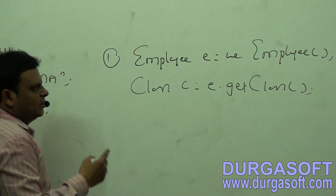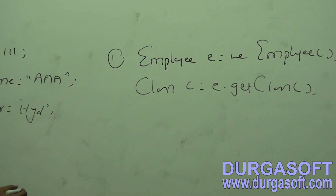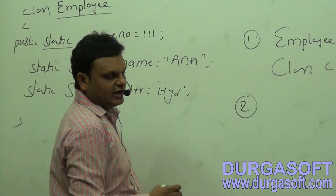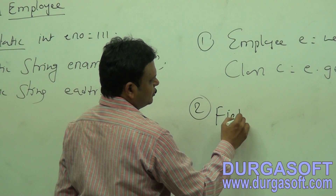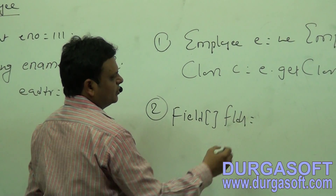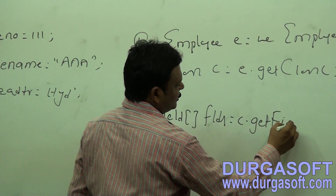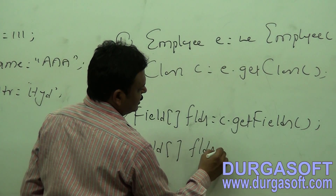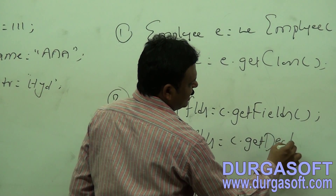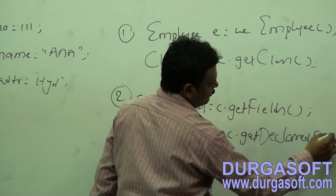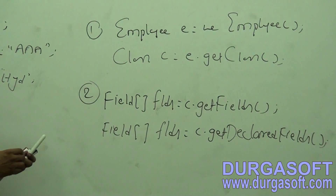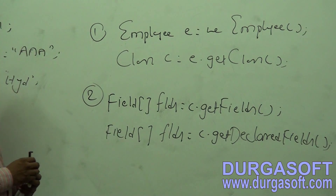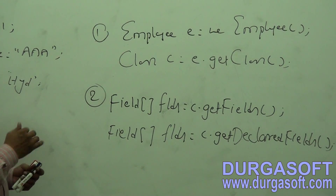After getting the class object, I want to get all the variables metadata in the form of a field array. To get all the variables metadata in the form of a field array, we need to use one of two methods: Field[] flds = c.getFields(); or Field[] flds = c.getDeclaredFields().